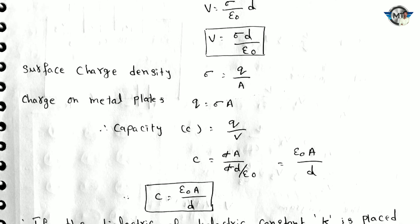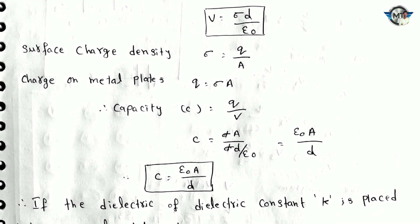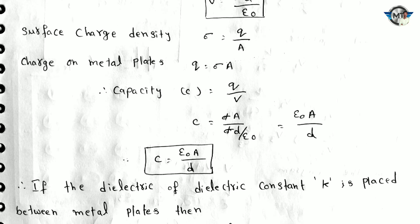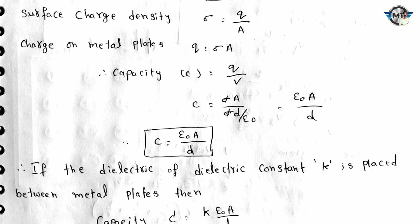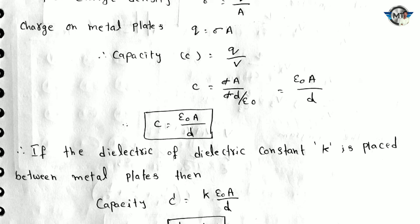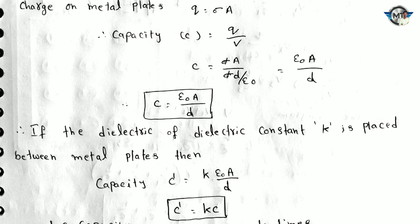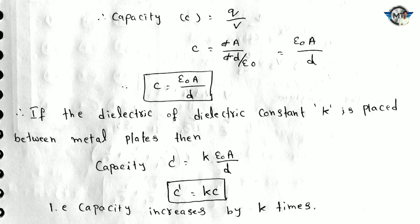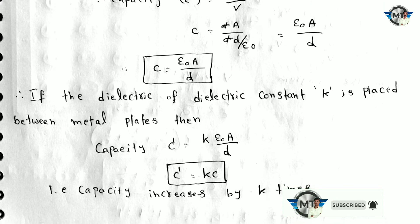Capacitance C is equal to q by V. Substituting Q and V values: C is equal to sigma A divided by sigma d by epsilon naught. The sigma cancels, giving C is equal to epsilon naught A by d. If a dielectric constant k is placed between the metal plates, the capacitance becomes C prime equal to k times epsilon naught A by d. Therefore C prime is equal to k times C.